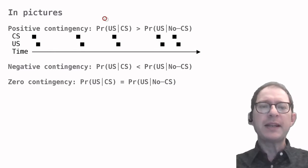If we want a mathematical expression of all this, we can say that the probability of the US given that the CS has just occurred is higher than the probability of the US without the CS having occurred. In the formula, Pr means probability and the vertical bar means given, as in probability of the US given that the CS has occurred or given that the CS has not occurred as in the second expression.